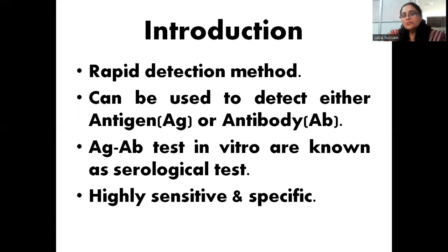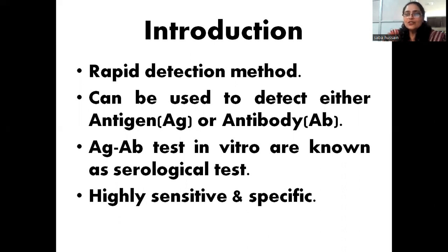This method can either detect antigen or antibody. As the rule applies, one will be known and the other will be unknown. Since antigen will interact with antibodies, you can determine whether a particular antigen or antibody is present or not in the test system. When this test is performed in vitro, it is known as a serological test.